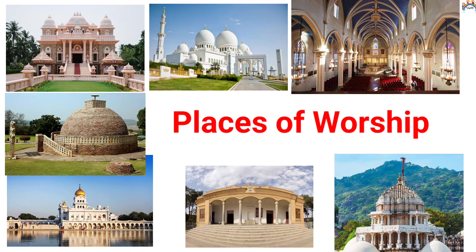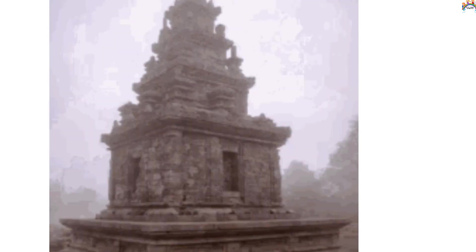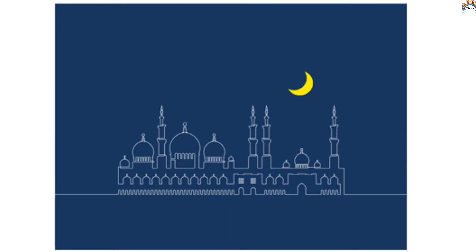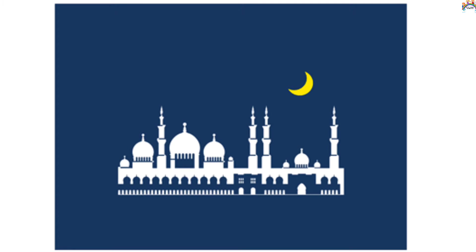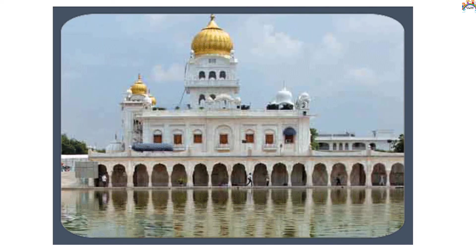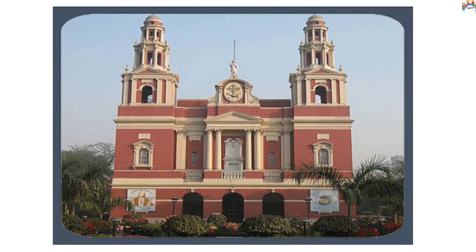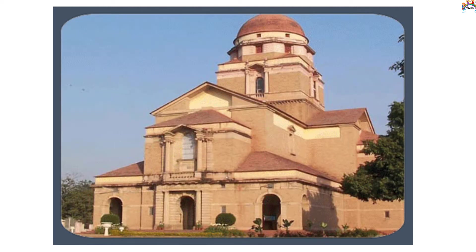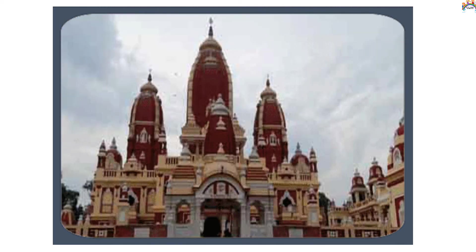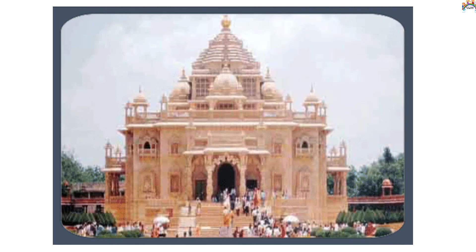Places of worship. There are different places of worship where people go to pray to their God. There is only one God, but they all call him by different names. Let's learn the different places of worship, holy book, founder, and sacred symbol. All religions teach us to love, help, and respect each other. Let's see the different places.